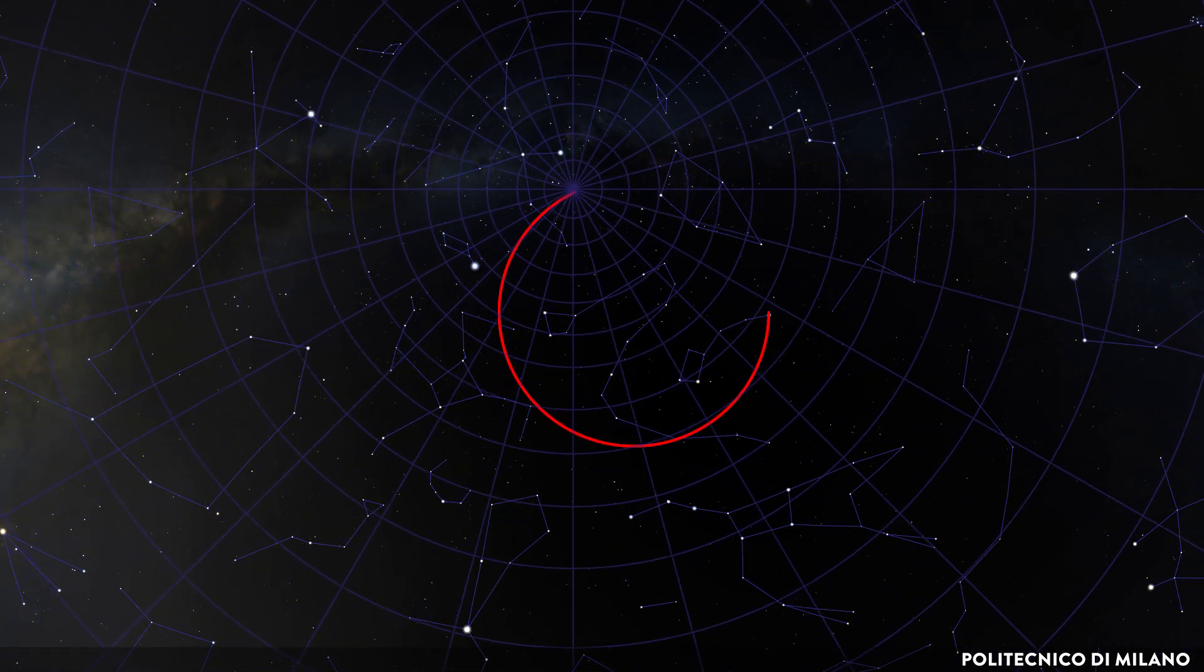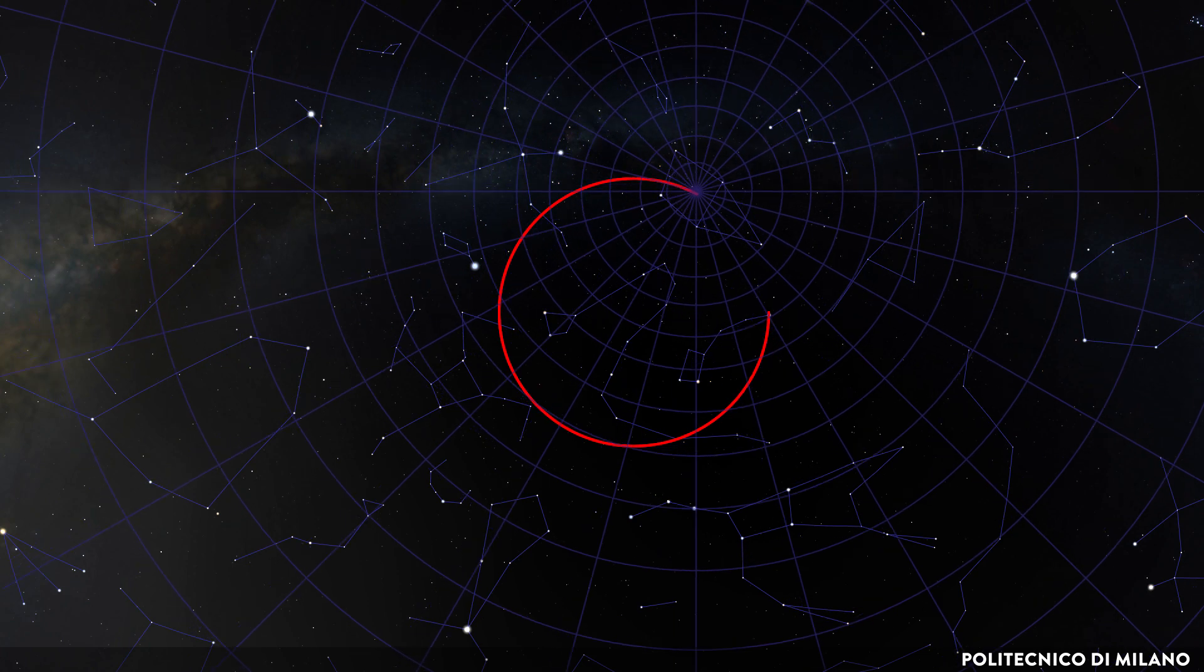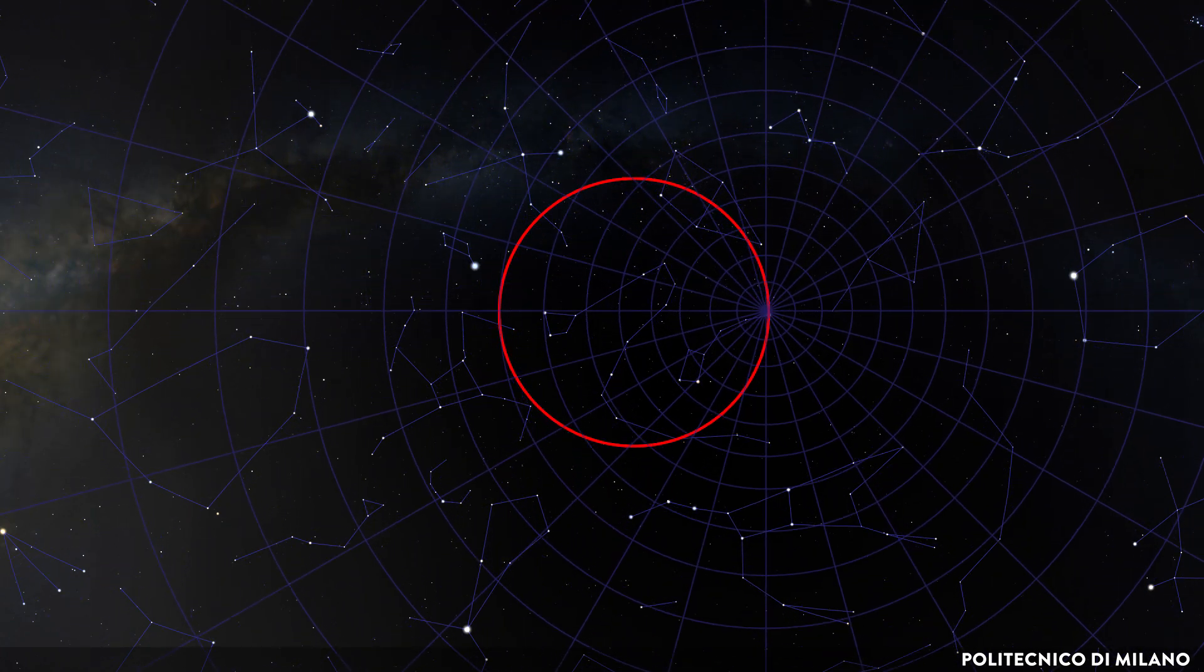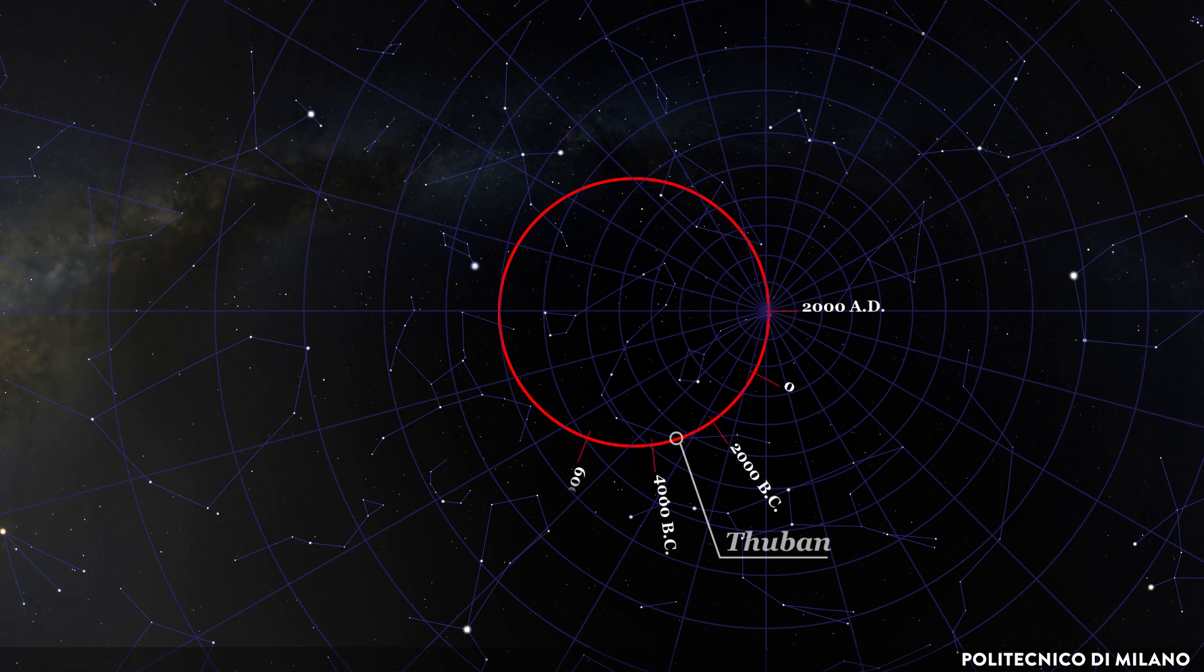What we call the pole star today is actually the specific star close to which the North Pole is today. During the first half of the third millennium BC, another star, Thuban of the constellation Draco, was the pole star.